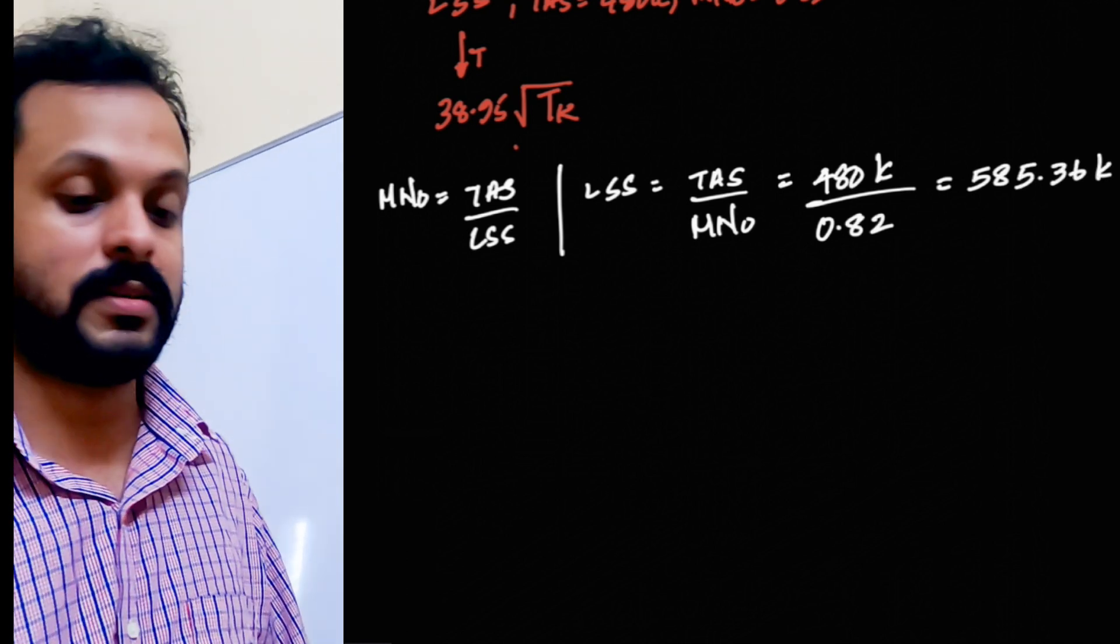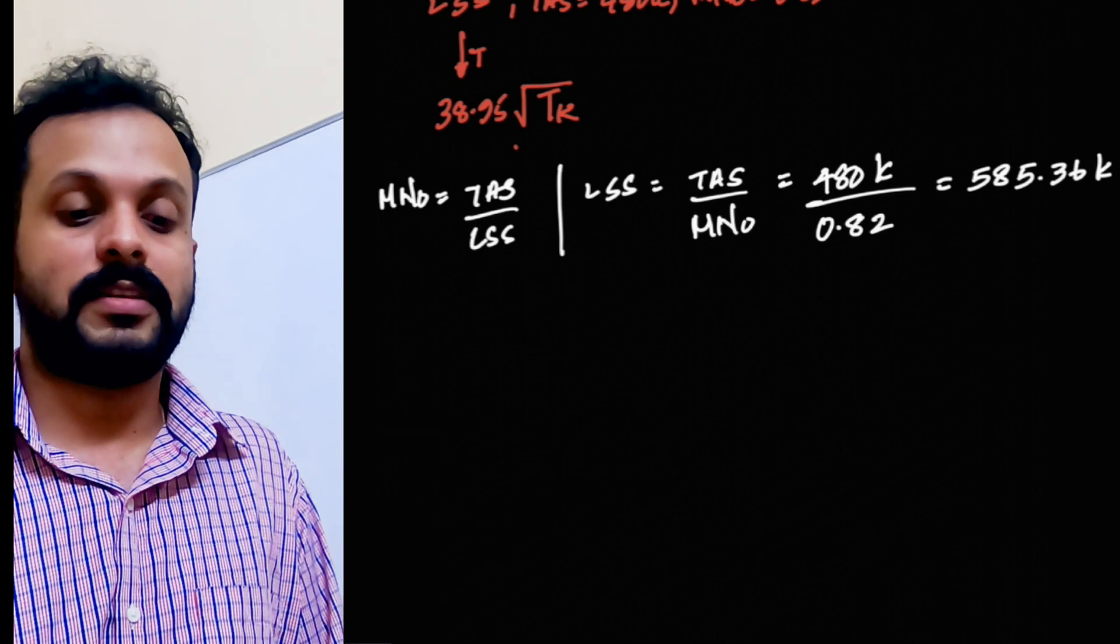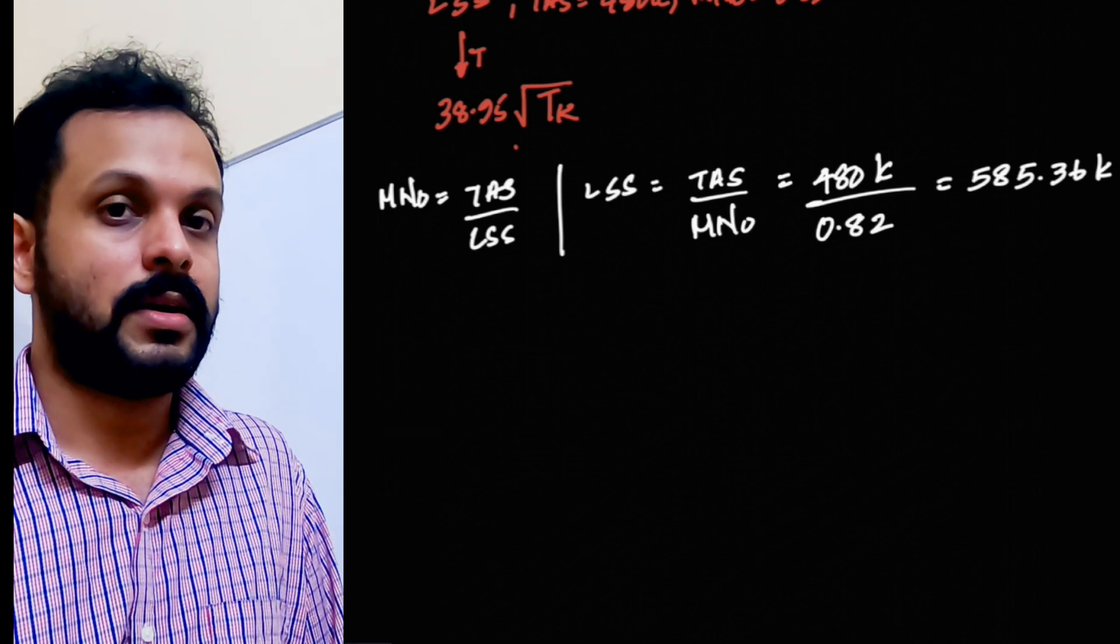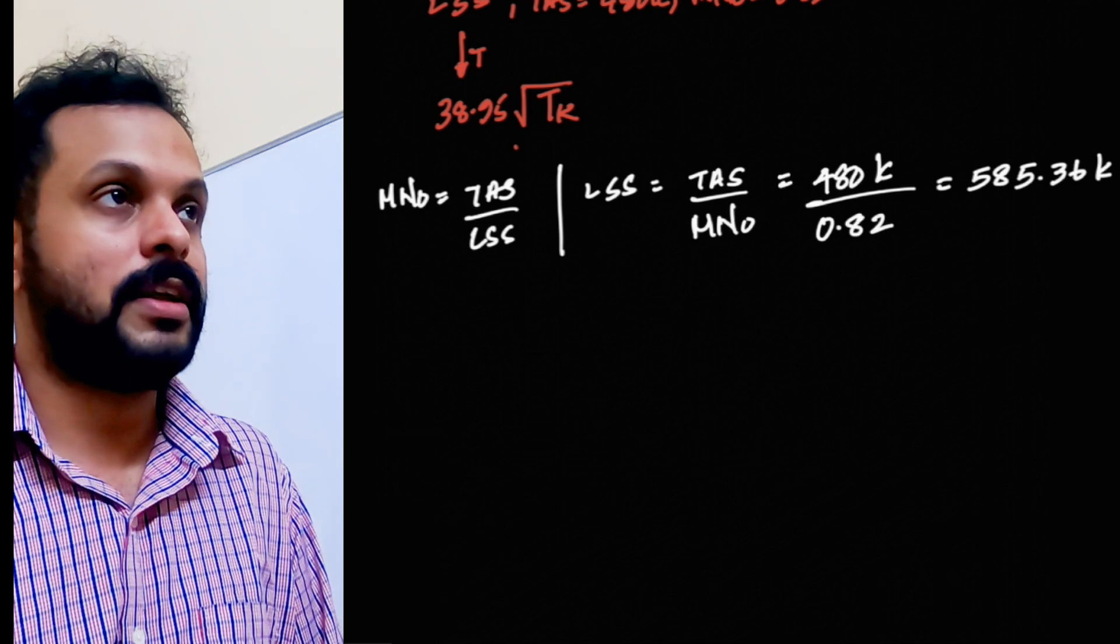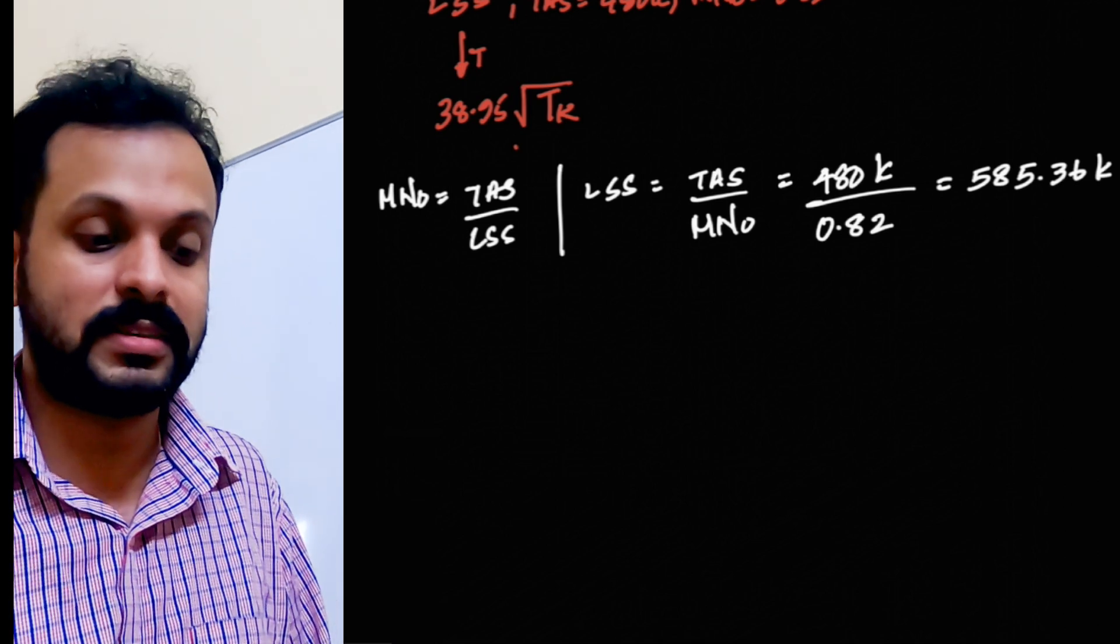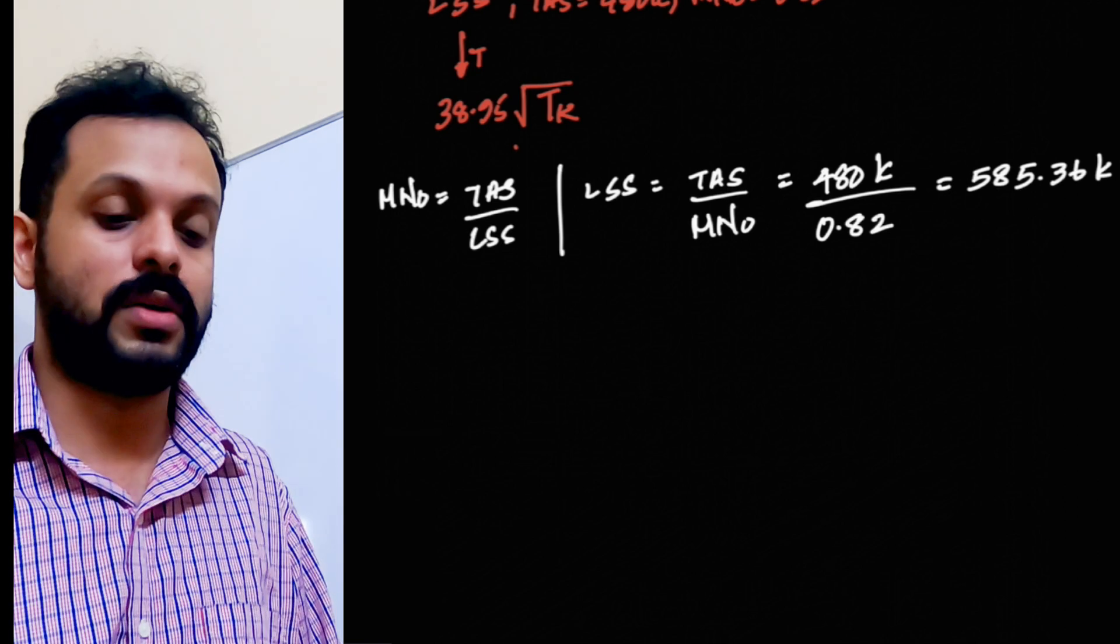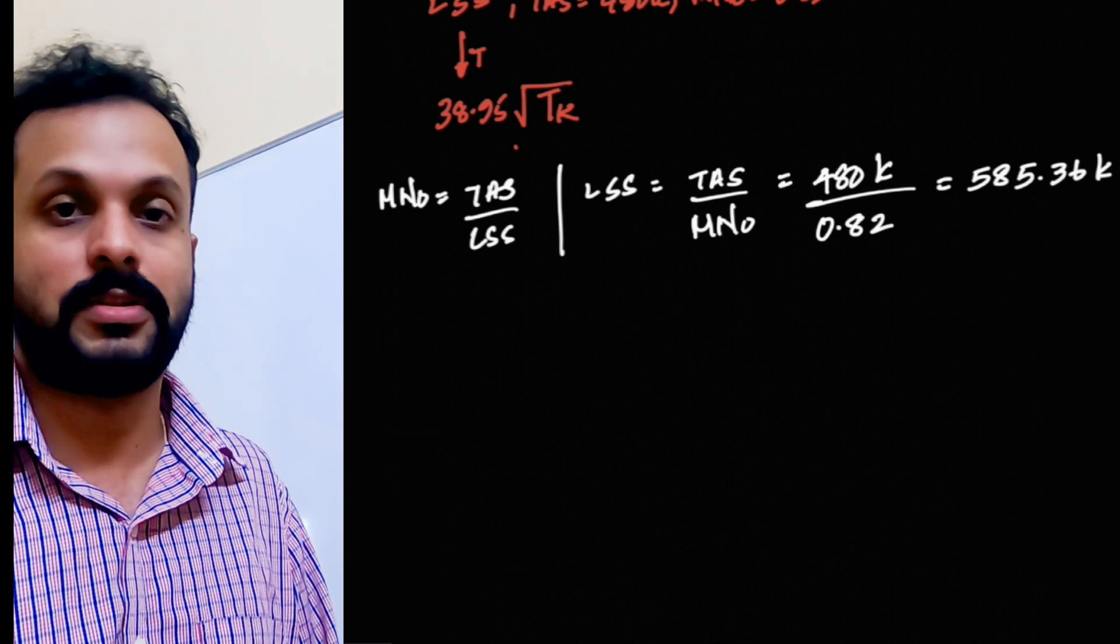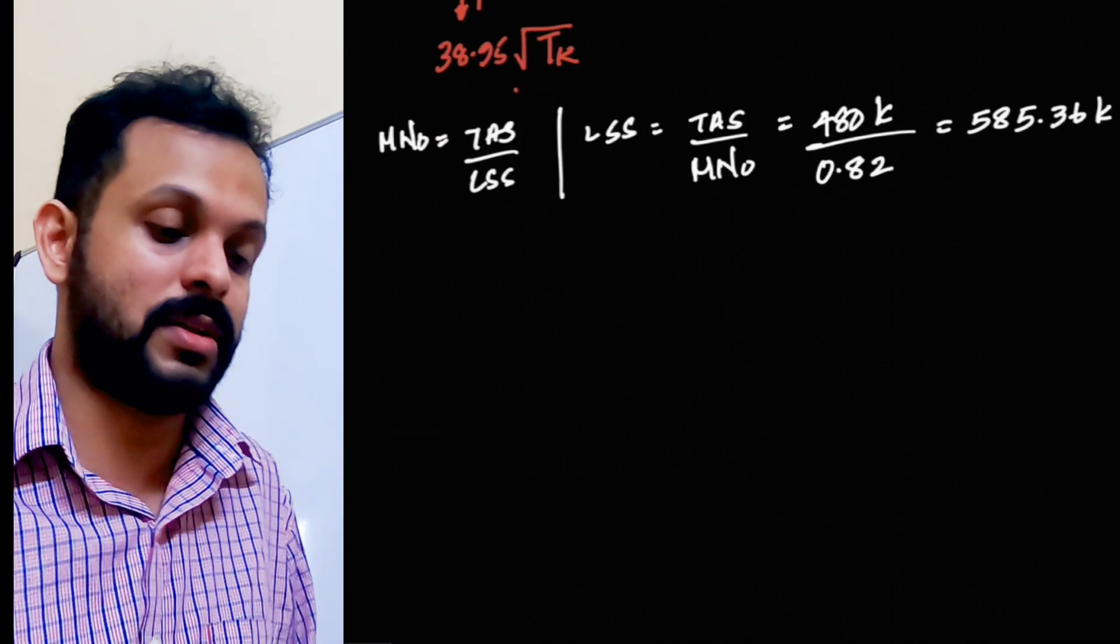Let me keep the decimal place intact for now. 585.36 is the speed of sound. Generally, the speed of sound at sea level under ISA condition is 660 knots. So you can see how at a particular higher altitude, the speed of sound is reduced to 585.36. That is because of reduction in temperature.